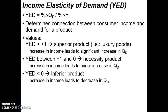Income elasticity of demand looks at how the quantity demanded for a product changes in response to a change in consumer income. There are three values of interest. First, when YED is greater than positive 1, those are superior products — often considered luxury goods. When the value is greater than positive 1, it means an increase in income leads to a significant increase in quantity demanded. We could also have a YED between 0 and positive 1.